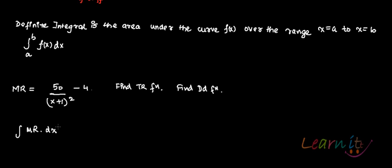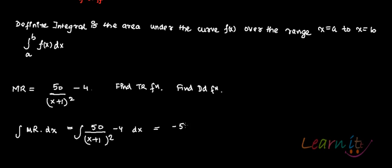MR is the derivative of the TR function, so when you are given the MR function you integrate it to get the TR function. We find the integral of [50 / (x+1)² − 4] dx, which gives us −50 / (x+1) − 4x + C.